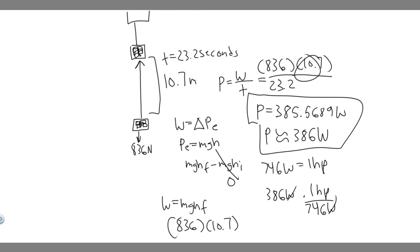So that would cancel. So you just do 386 divided by 746. And you get 0.517. And it would be in horsepower.